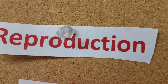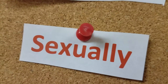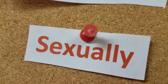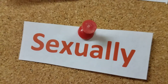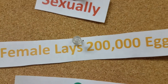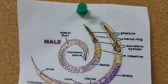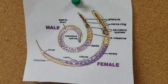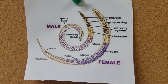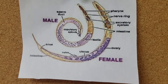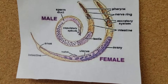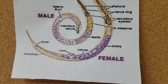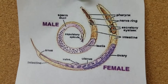The next system I'm going to talk about is the reproductive system. These worms reproduce sexually, which means it takes a male and female, and the female can lay up to 2,000 eggs. Here's a diagram — the first thing you're going to notice is that the female worm is much larger than the male worm. You can see the location of the ovary and the uterus, and where the eggs are located right in the middle.